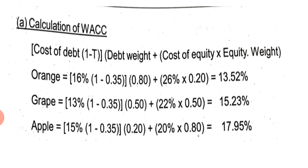In the case of Orange, the weighted average cost of capital is 13.52%. In the case of company Grape, it is 15.23%, and in the case of Apple, it is 17.95%. Write down the question in your notebook along with the solution.